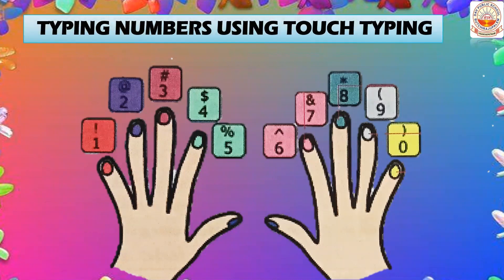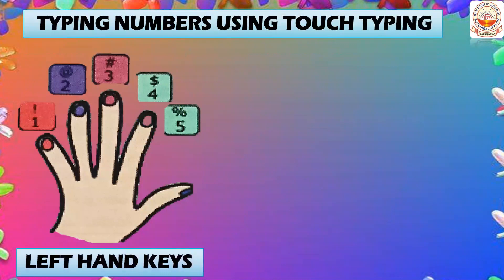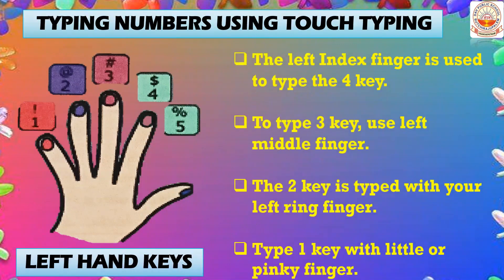Now let's look at typing numbers using touch typing. For the left hand: use the left pinky finger to type 1, the left ring finger to type 2, the left middle finger to type 3, and the left index finger to type 4.